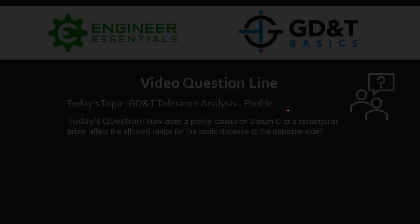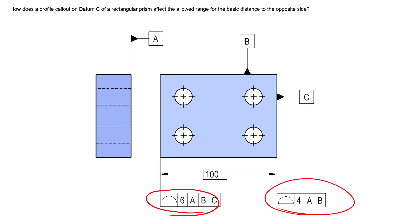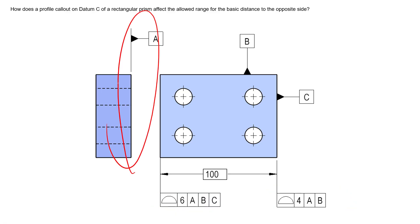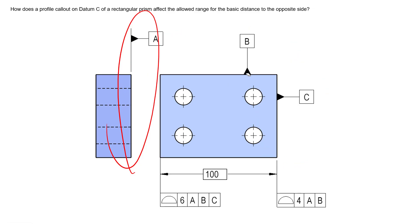Let's take a look at this example drawing — it's an incomplete drawing, but it does get the point across of the relationship between these two profile of a surface specifications. We can see datum feature A identified here, datum feature B identified here, and datum feature C identified right here.